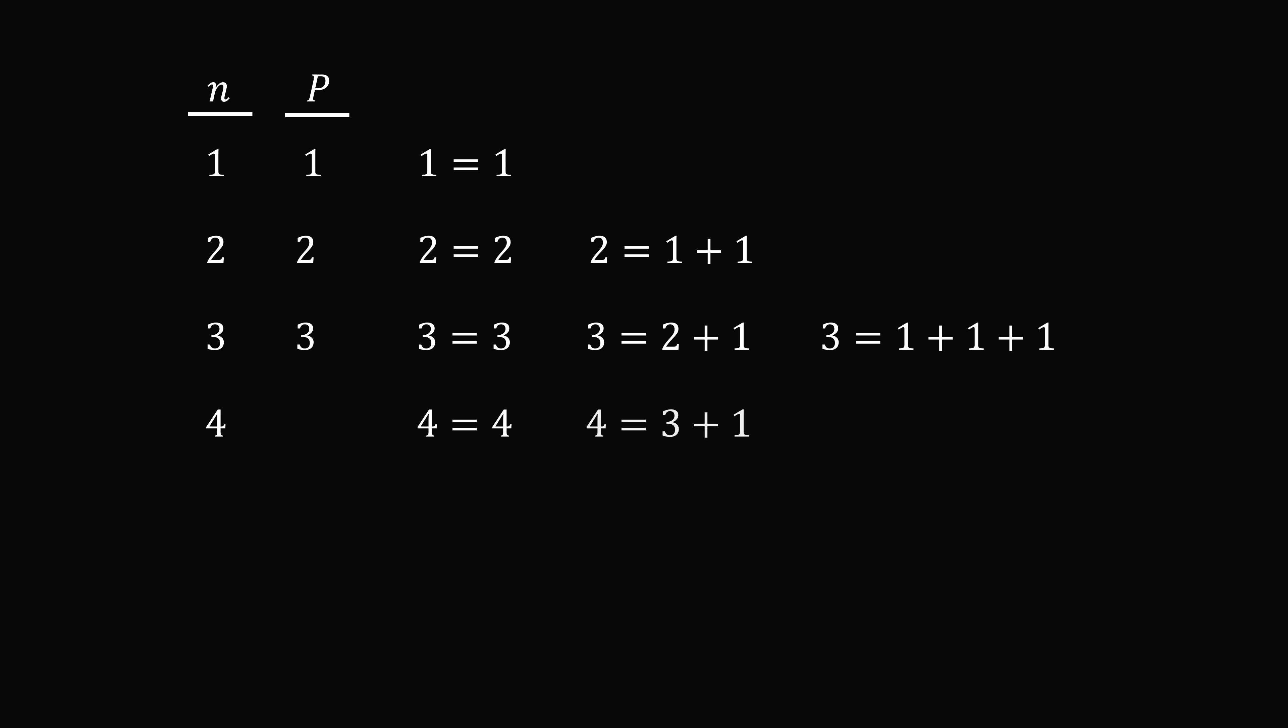When we go to 4, we can have 4, we can have 3 plus 1, 2 plus 2, 2 plus 1 plus 1, or 1 plus 1 plus 1 plus 1. Again, it's obvious that 4 is the largest product, but we could also have 2 plus 2, because 2 times 2 equals 4, so P equals 4.